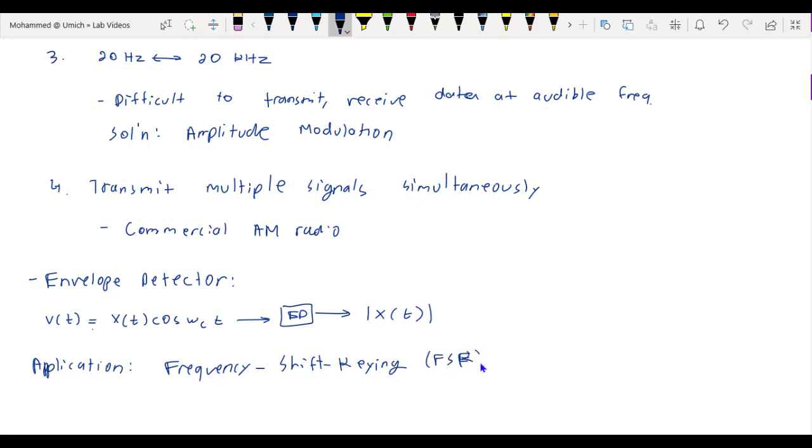So an analog communication system like AM radio transmits an analog signal, that is, a signal that's continuous in time and continuous in amplitude, from the transmitter to the receiver.